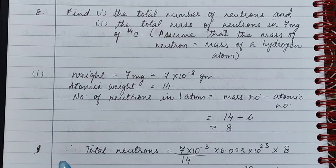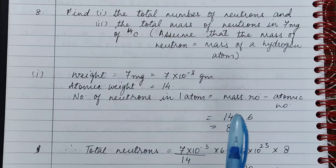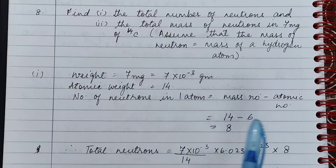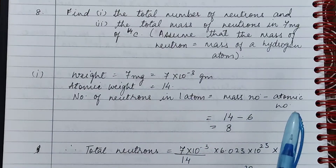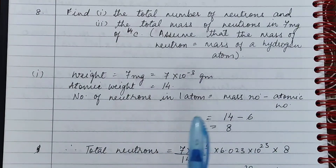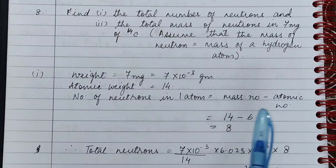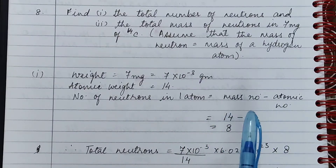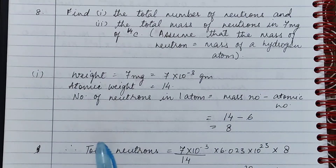Question 8. Find first the total number of neutrons and second the total mass of neutrons in 7 milligrams of C14. Assume C14 is carbon-14, and that the mass of a neutron is equal to the mass of a hydrogen atom.